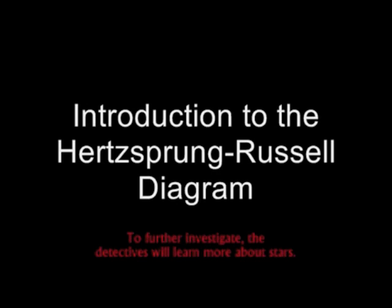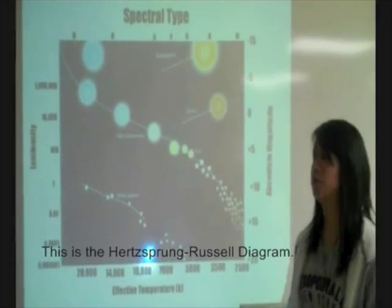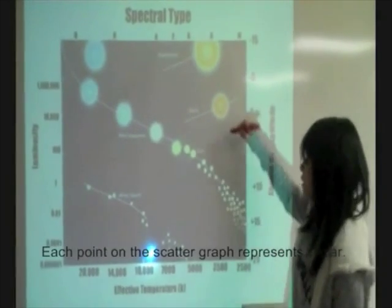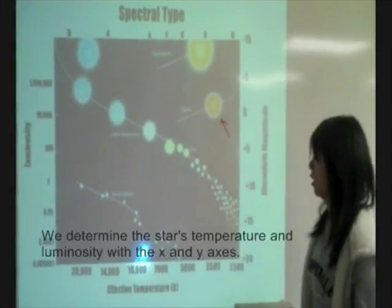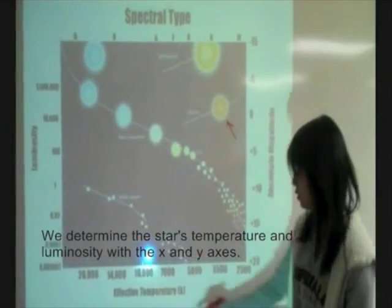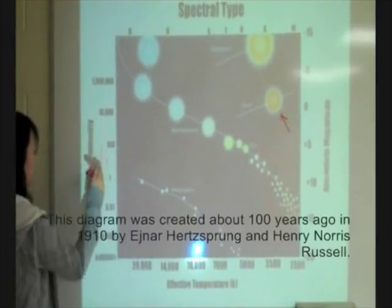To further investigate, the Detectives will learn about stars. This is the Hertzsprung-Russell diagram. Each point on the scatter graph represents a star. We determine the star's temperature and luminosity with the x and y axes.